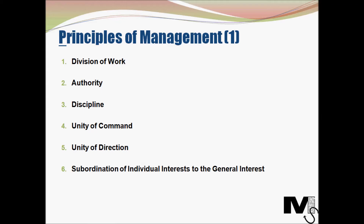The next principle is authority. Managers must have the authority to give orders, but they must also keep in mind that with authority comes responsibility. The next is discipline. Every organization must have a certain amount of discipline, and discipline must be upheld — but this is always a two-way equation. Employees obey orders if management provides good leadership. This is very relevant even in this day and age of technology and various ways managers organize and manage their teams.